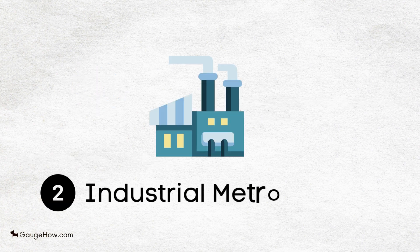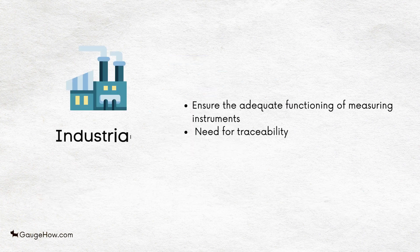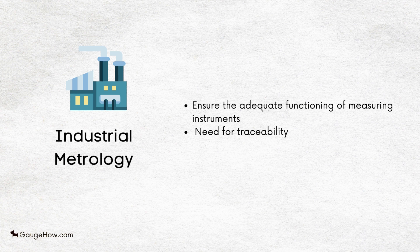Industrial metrology has to ensure the adequate functioning of measuring instruments used in industry as well as in production and testing processes. The metrological activities, testing and measurements are generally valuable inputs to work with quality in industrial activities. This includes the need for traceability, which is becoming just as important as the measurement itself.